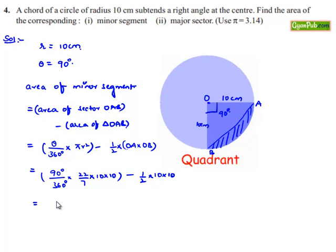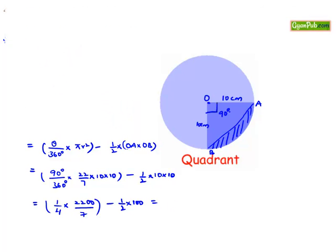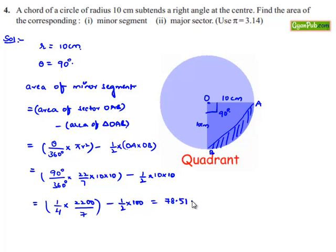This equals (90/360) times (22/7) times 100, minus (1/2) times 10 times 10. That is (1/4) times (2200/7) minus (1/2) times 100, which equals 78.51 minus 50.